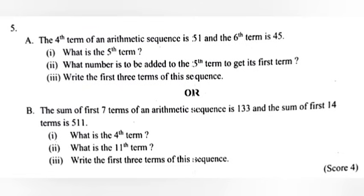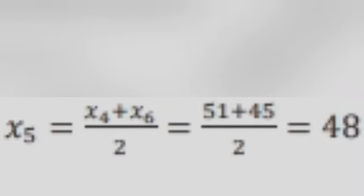Problem 5A: The fourth term of an arithmetic sequence is 51 and the sixth term is 45. Part 1: What is the fifth term? Answer: x₅ = (x₄ + x₆) / 2 = (51 + 45) / 2 = 48.